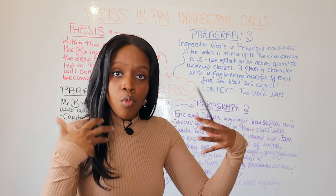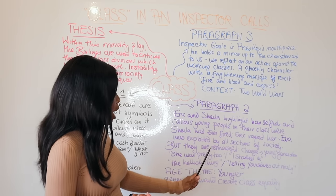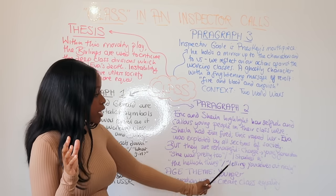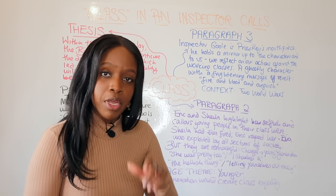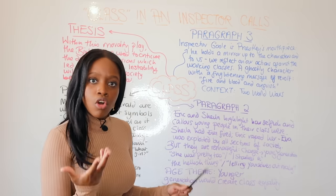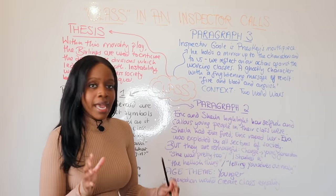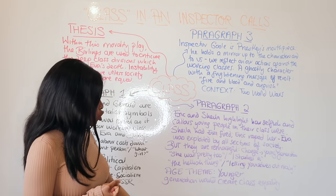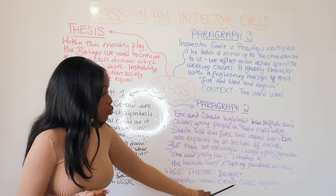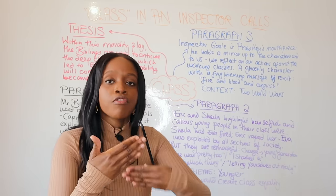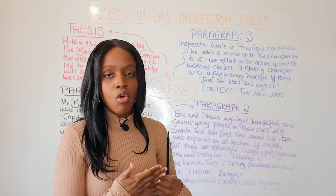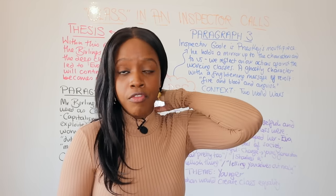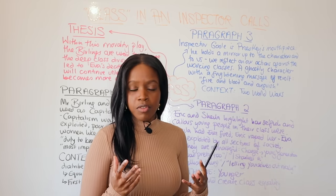Use specific quotations to illustrate this transformation. For Sheila, contrast her initial jealousy — 'she was pretty too' — with her admission in Act Three: 'I started it,' showing she is taking social responsibility and seeing it as her duty to help disempowered working-class women. For Eric, contrast his admission that he raped Daisy — 'I didn't even remember, that's the hellish thing' — with his final criticism of his family: 'You lot may be letting yourselves out nicely, but I can't.' In this paragraph, also discuss how Priestley uses the theme of age to show he believed the younger generation would drive class equality and push Britain toward socialism.